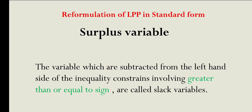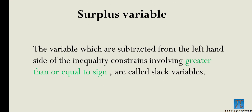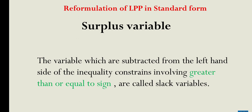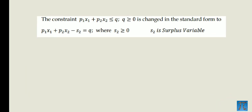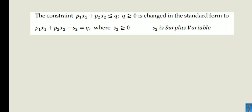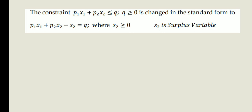Now, the surplus variable: variables subtracted from the left-hand side of a greater-than-or-equal inequality are called surplus variables. For a constraint P1x1 plus P2x2 greater than or equal to q, where q is greater than or equal to 0, we write: P1x1 plus P2x2 minus S2 equals q, where S2 is greater than or equal to 0. S2 is the surplus variable.